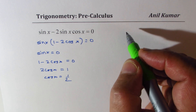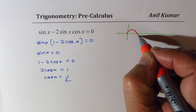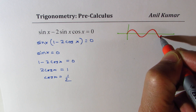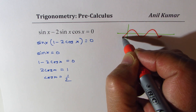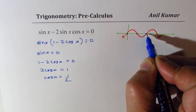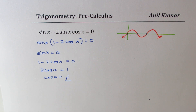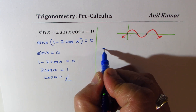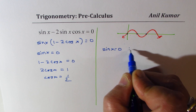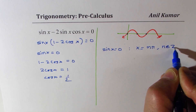Looking at the sine graph for general solutions: sin x = 0 gives x = nπ, where n belongs to integers.